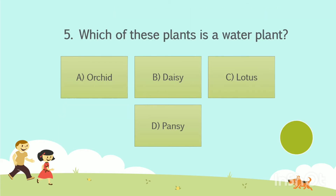Question number 5. Which of these plants is a water plant? Option A: Orchid. Option B: Daisy. Option C: Lotus. Option D: Pansy. Your time starts now. The answer is Option C, Lotus.